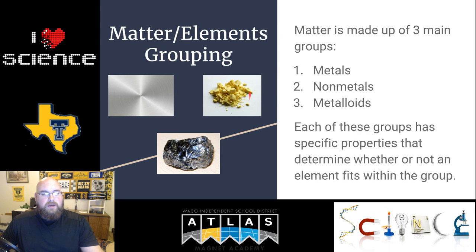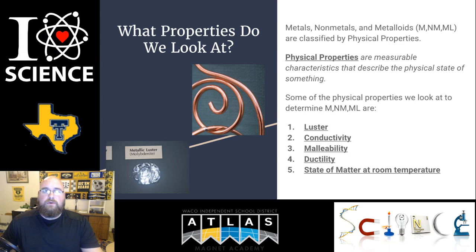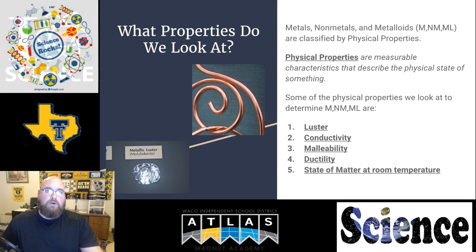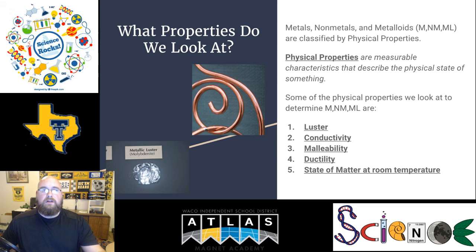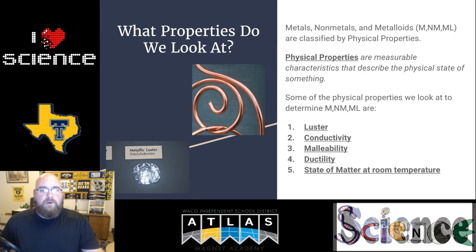Metals, nonmetals, and metalloids — you can abbreviate them as M, NM, and ML — are classified by typically five physical properties. Before we talk about what those are, let's remember what a physical property is. It is something we can measure, a characteristic we can observe that describes the physical state of something. It has nothing to do with how a substance reacts with other things or changes chemically.